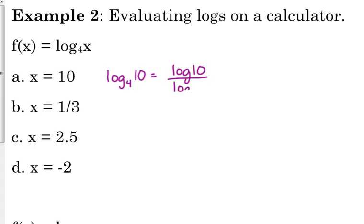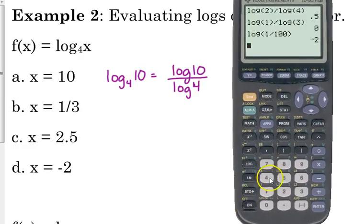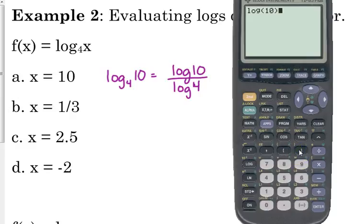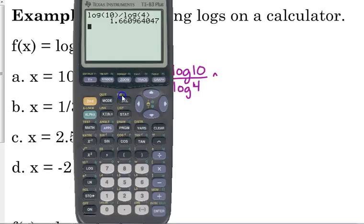So log of 10 divided by log of 4. It's the log of the bigger number, not necessarily bigger in magnitude, just it's not the subscript, over the log of the base. So we type that in. Log of 10, again being careful that we close our parentheses after the 10, then divide log of 4. Okay, so that is approximately 1.661.